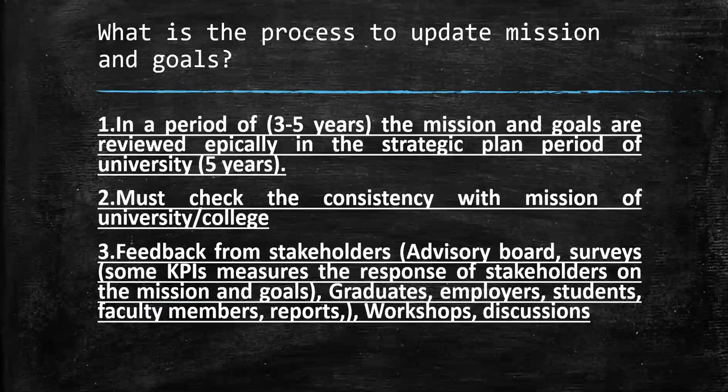Feedback from stakeholders, advisory reports, surveys — some KPIs measure the response of stakeholders on the mission and goals: graduates, employers, students, faculty members, reports, workshops, discussions. This means you may not need to wait five years to update your mission. Maybe based on external reviewing, an academic accreditation body, or an urgent requirement, you may need to update your mission and goals.